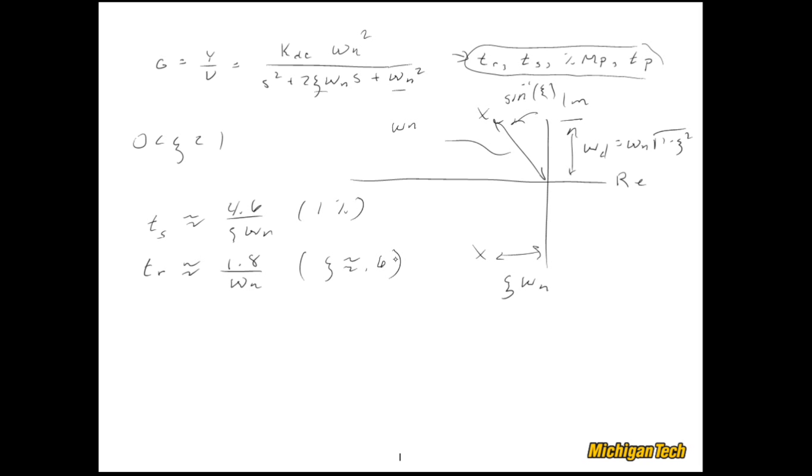When zeta is different from 0.6 it's okay but not quite great, but it's good enough to get you going. Percent overshoot is 100 times e to the negative pi zeta over square root of 1 minus zeta squared, and the time of the peak overshoot is pi over omega d.